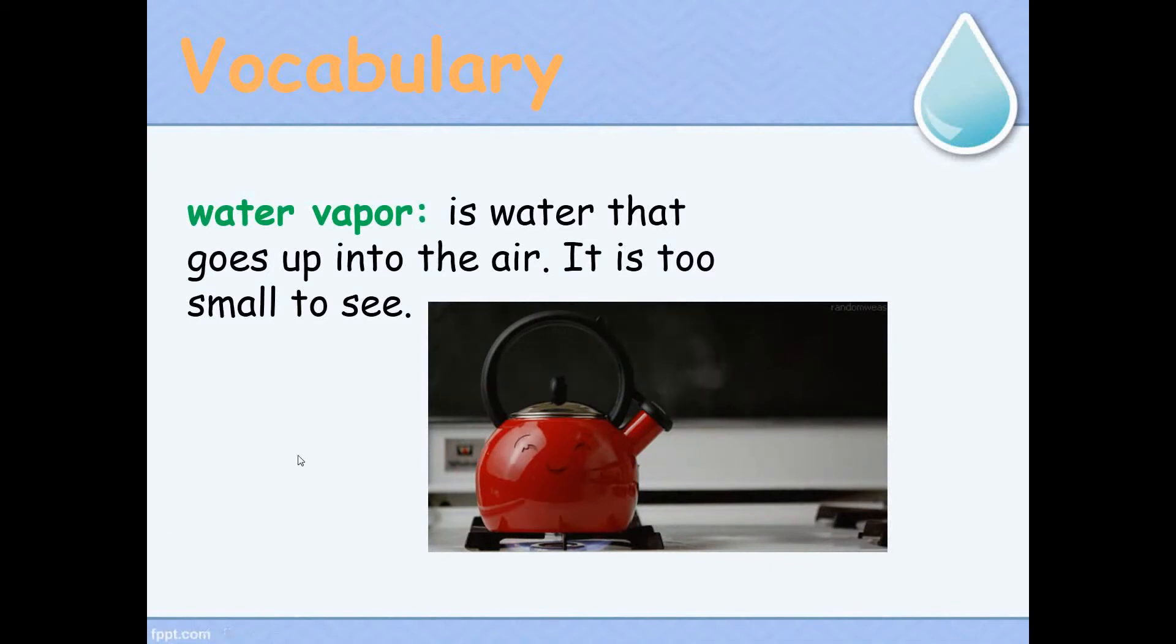Water vapor is water that goes up into the air. It is too small to see. In order to understand water vapor, you can look at the steam that goes from boiling water in a kettle or a pot.